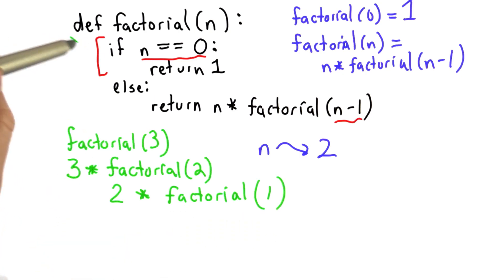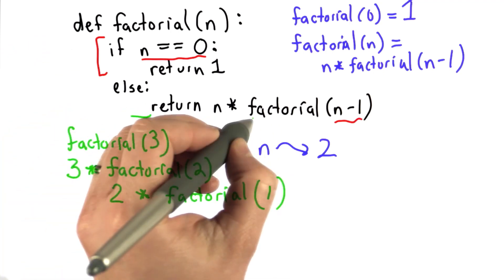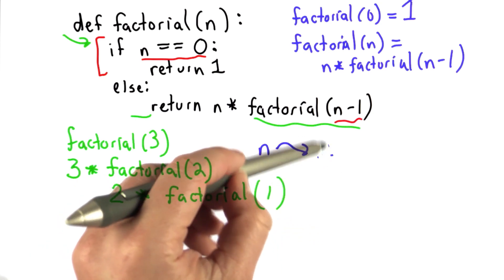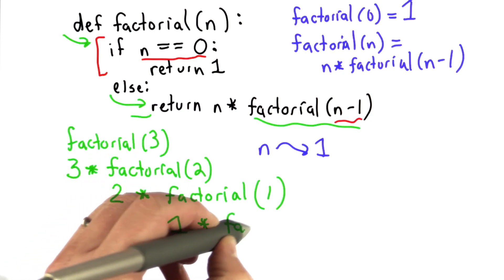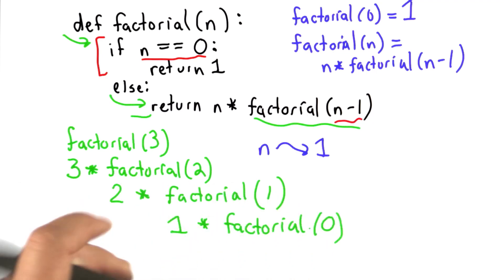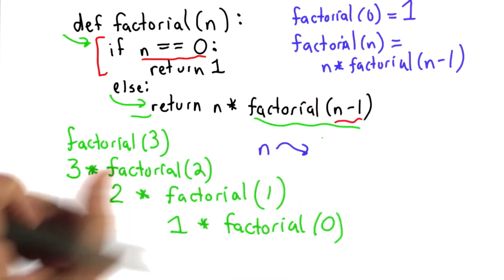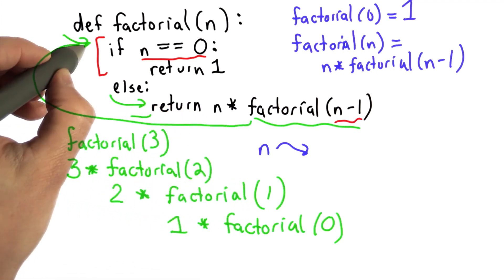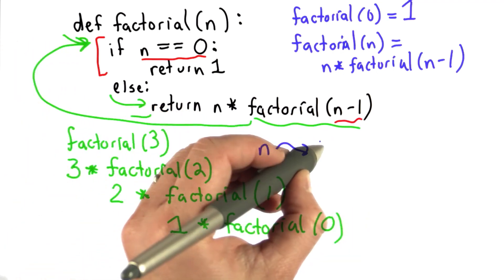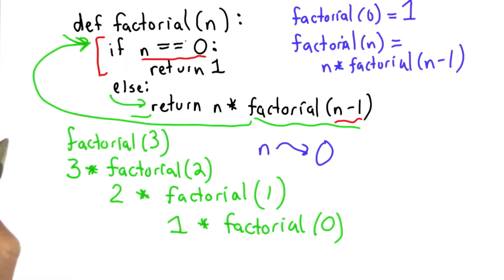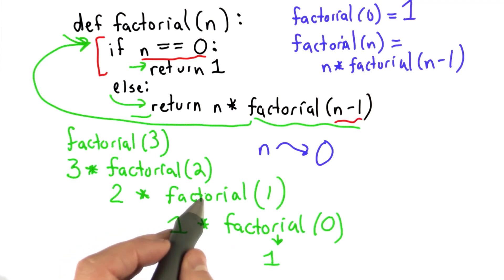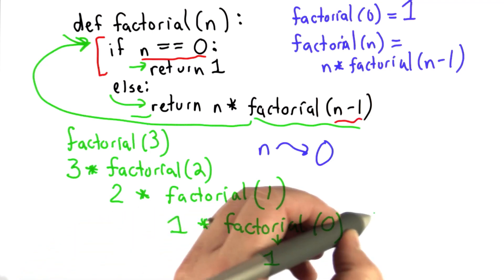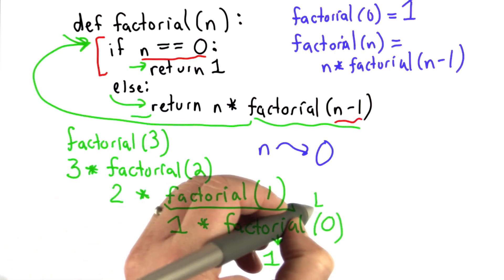So we're going to reenter factorial, but this time the value of n refers to 1. Again, this test is false, so we go to the else clause, and now we're going to return n, which is 1, times the result of factorial of 0. So now we're calling factorial of 0. We go back into the procedure, now the value of n is 0, and this test is actually true - n equals 0. So we return 1. That means the result of factorial of 0 is 1. So to get the result of factorial of 1, we had 1 times factorial of 0, that's 1 times 1, which is 1.